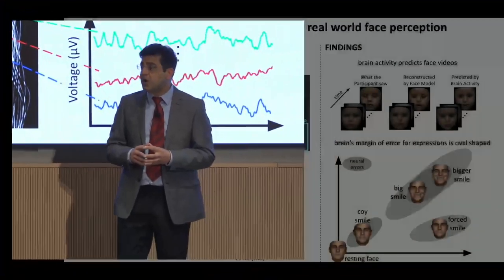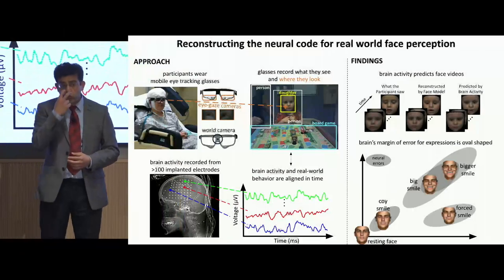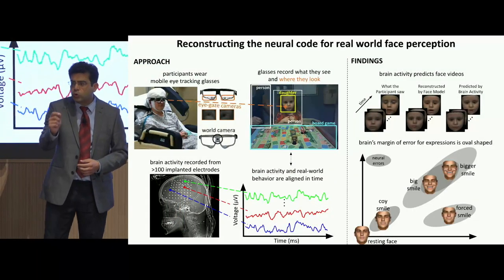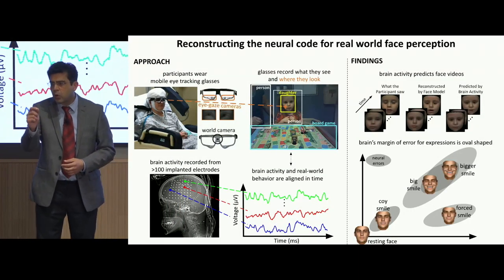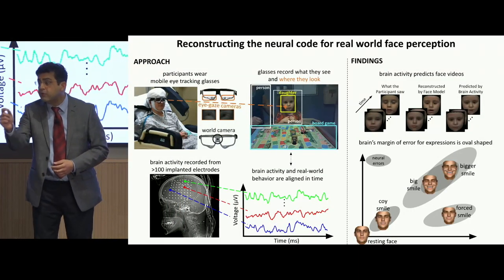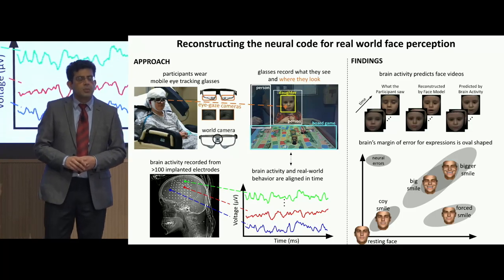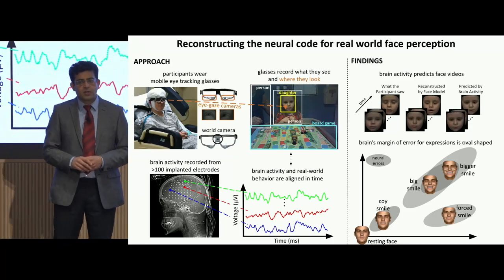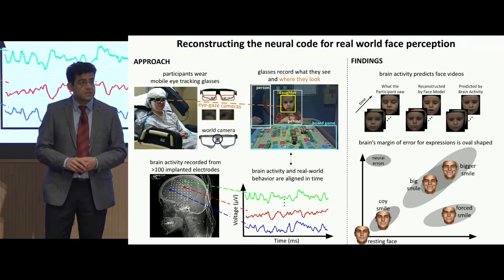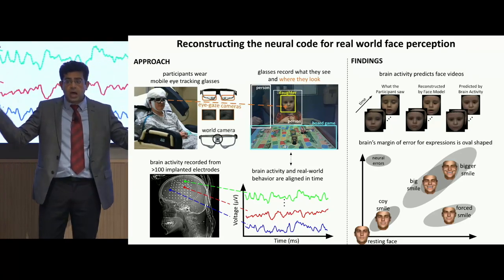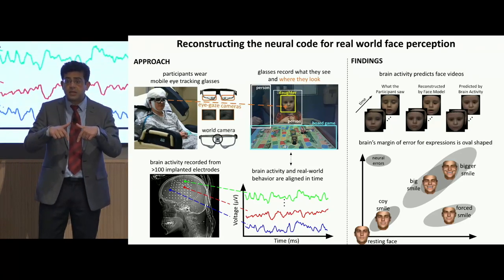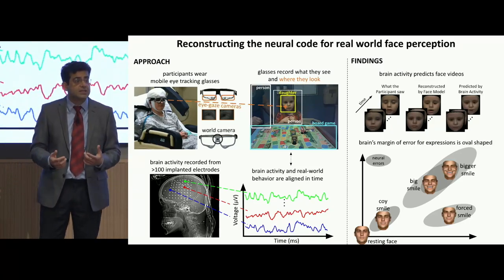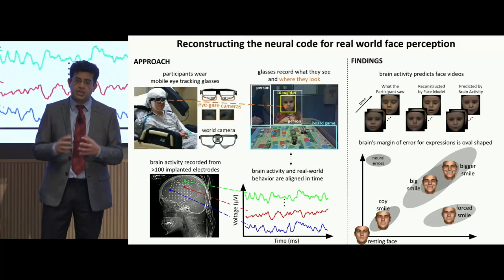This is not how we see in real life. We move our eyes. We choose who to look at, when to look, and for how long. But we don't study the brain in the real world, because capturing the environment, our behavior in it, and brain activity simultaneously is incredibly difficult.